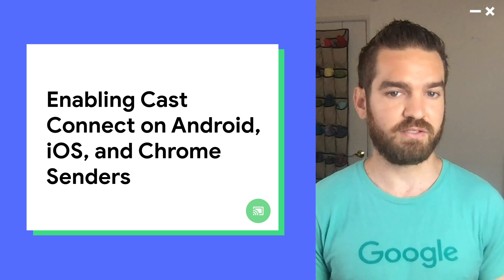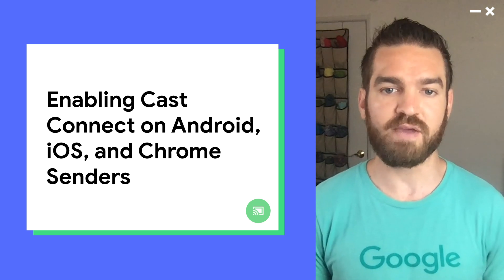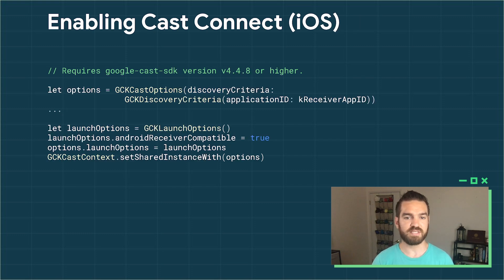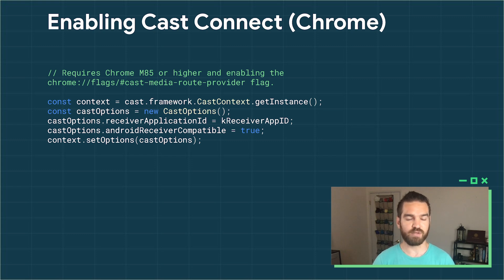Let's take a look at the senders. The main change you'll need to make on the sender side is simply declaring that they are compatible with a native Android TV app. On Android, this is accomplished by setting the Android receiver compatible flag to true on the launch options. On the iOS sender, this is done by setting the same field on the GCKLaunchOptions, which are then set on the GCKCastContext. This same field is also available on the Cast options on the Chrome sender. If the Android receiver compatible flag is not set when you cast to an Android TV, it will open the normal receiver instead of opening your native Android TV app.